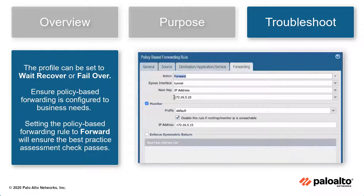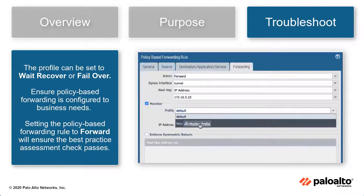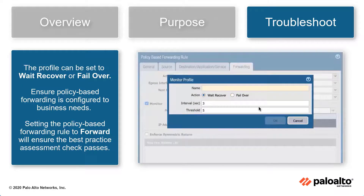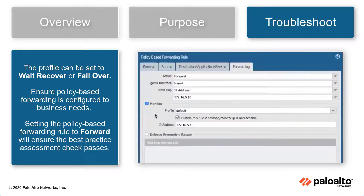Or failover, which uses the path in the routing table if the egress interface fails or checks the remaining policy-based forwarding rules based on the session configuration. Ensure policy-based forwarding is configured to business needs. Setting the policy-based rule forwarding to forward will ensure the best practice check result passes.